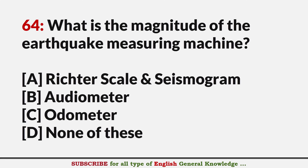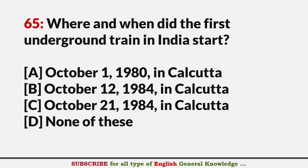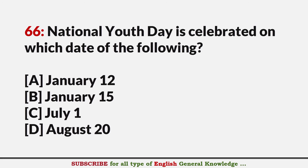What is the instrument for measuring the magnitude of an earthquake? Answer A: Richter scale and seismograph. Where and when did the first underground train in India start? Answer C: October 24, 1984 in Calcutta. National Youth Day is celebrated on which date? Answer A: 12 January.